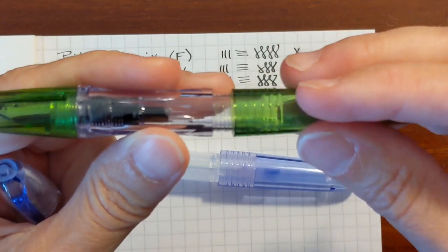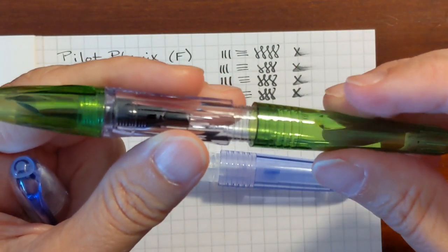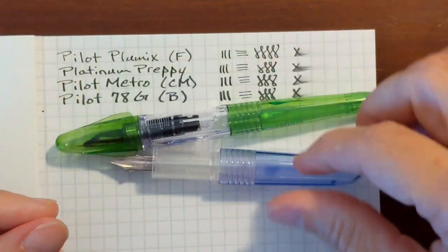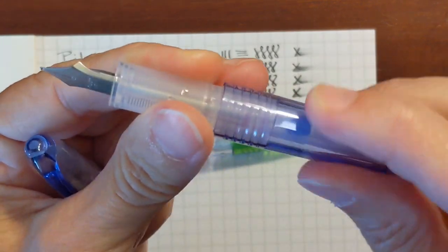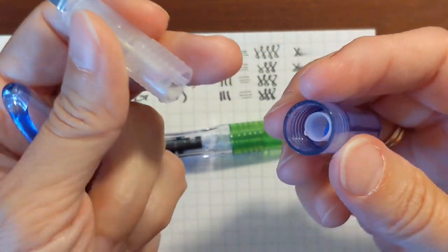It has the blocky threads on the section, like the Petite One does. Now, I'm not one who has any interest in eyedropping a pen.